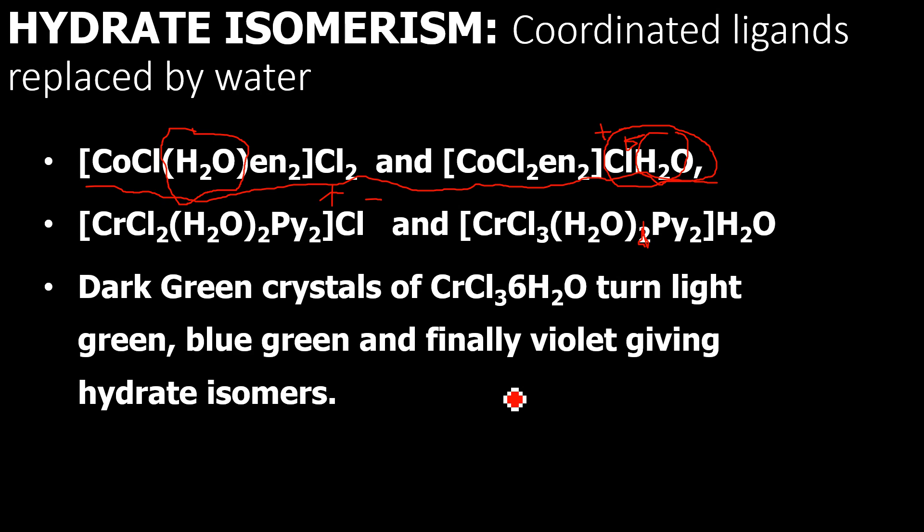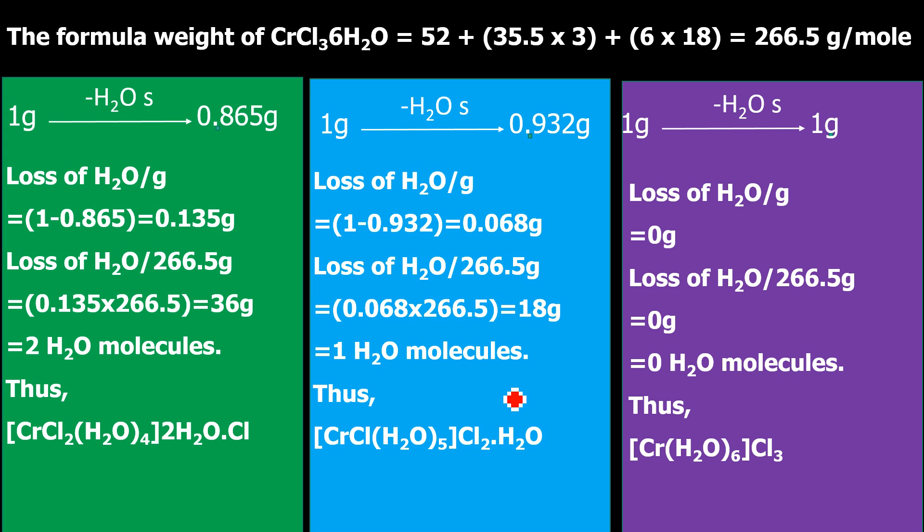A classic example of hydrate isomerism is given by aquated chromium chloride, the CrCl₃·6H₂O crystals. When precipitated from hot water, they are dark green in colour. When brought out, they eventually turn light green, blue-green, and finally violet coloured — these are hydrate isomers. When dropped in water, because of the addition of water, they finally turn violet. I will explain this with three examples.